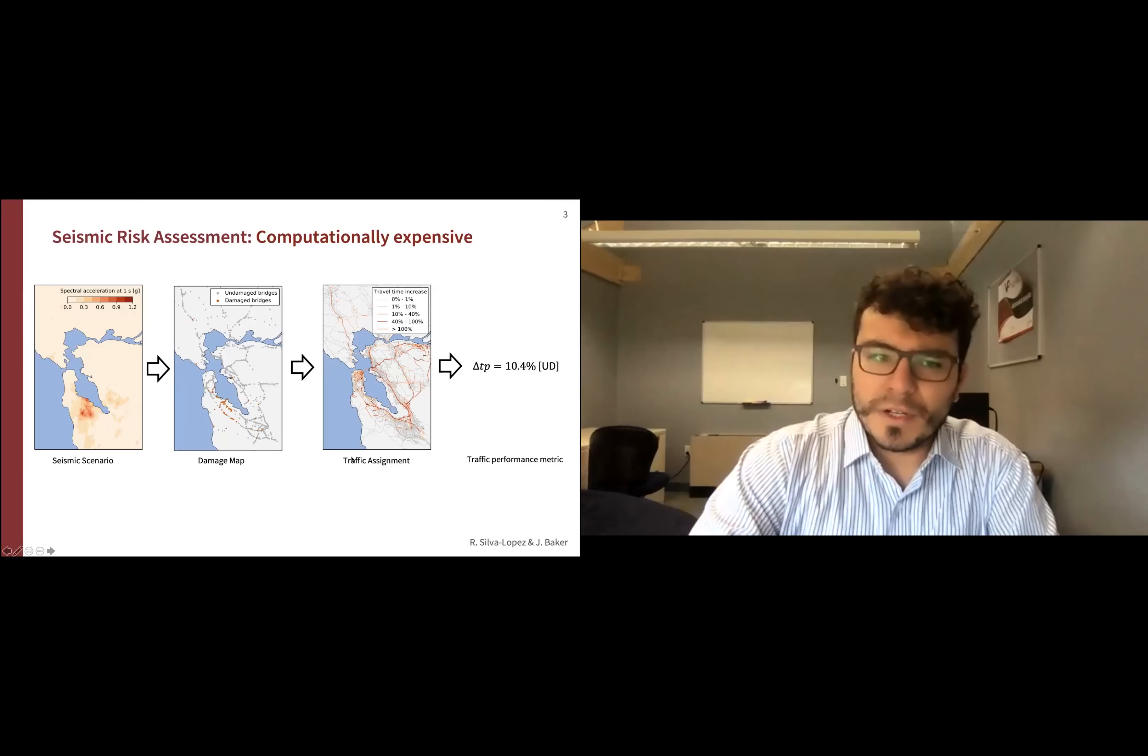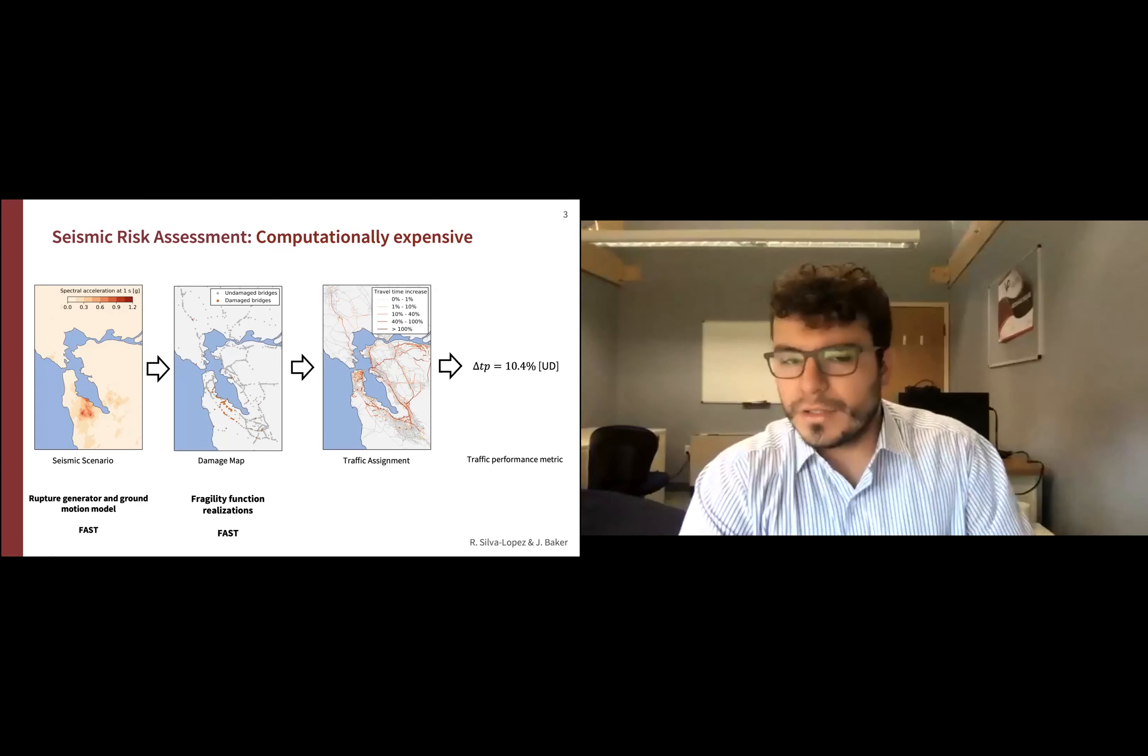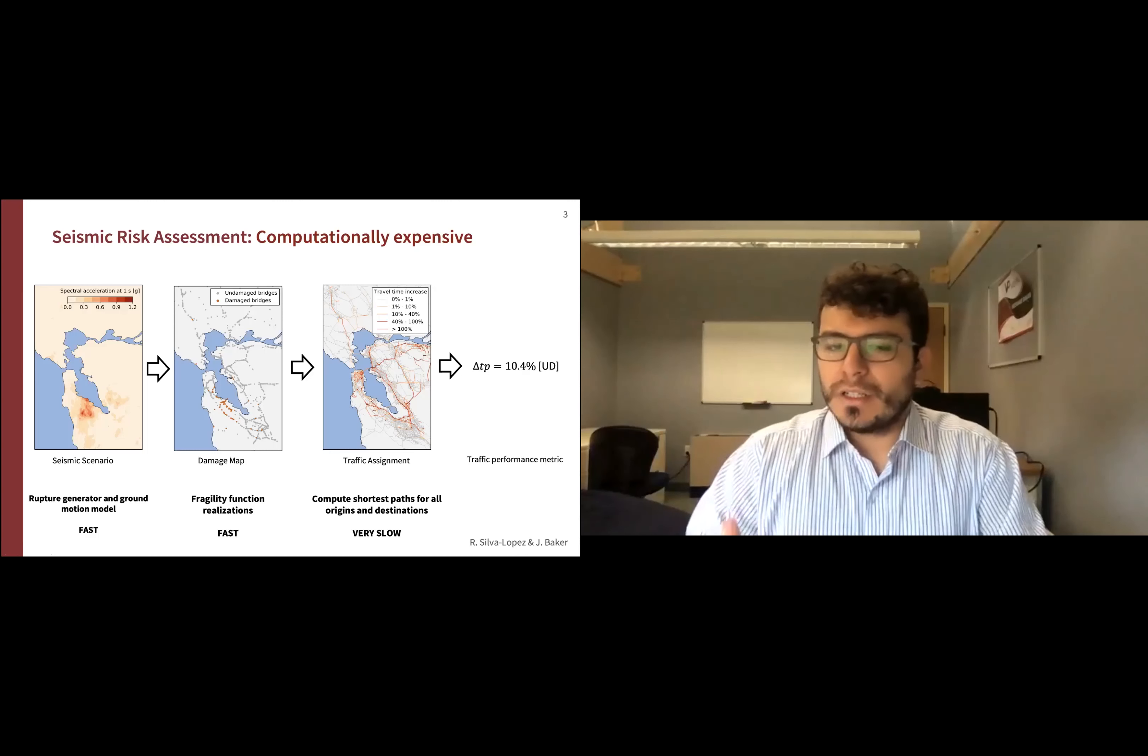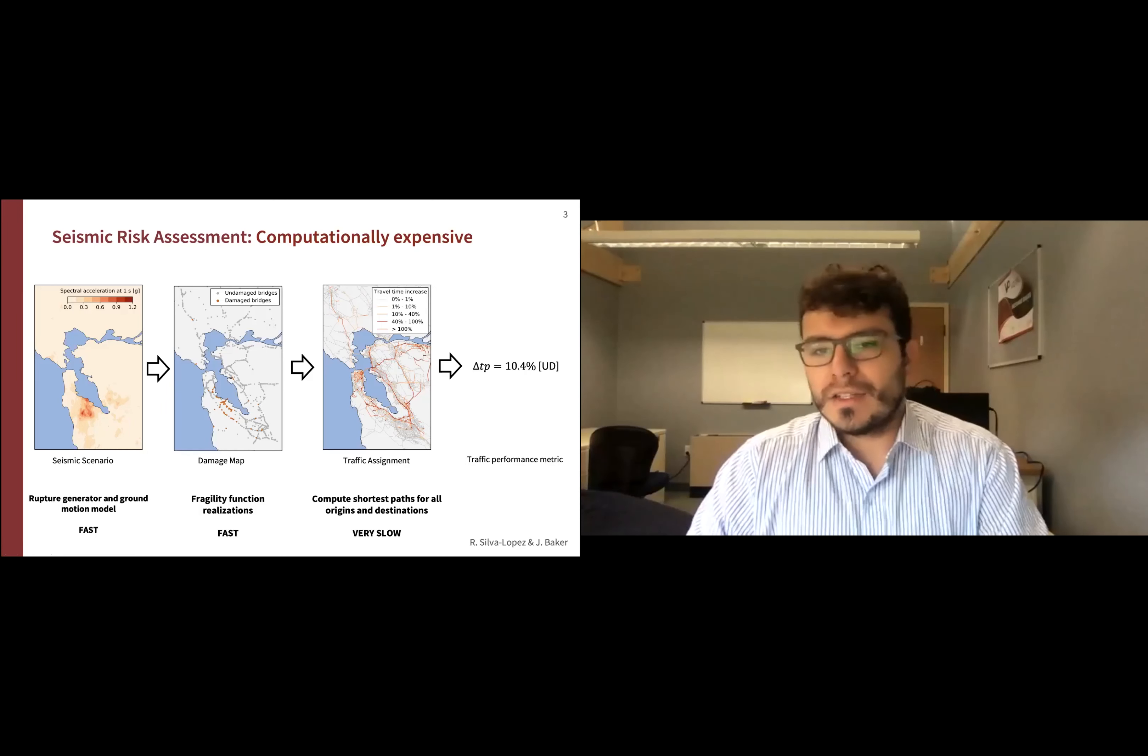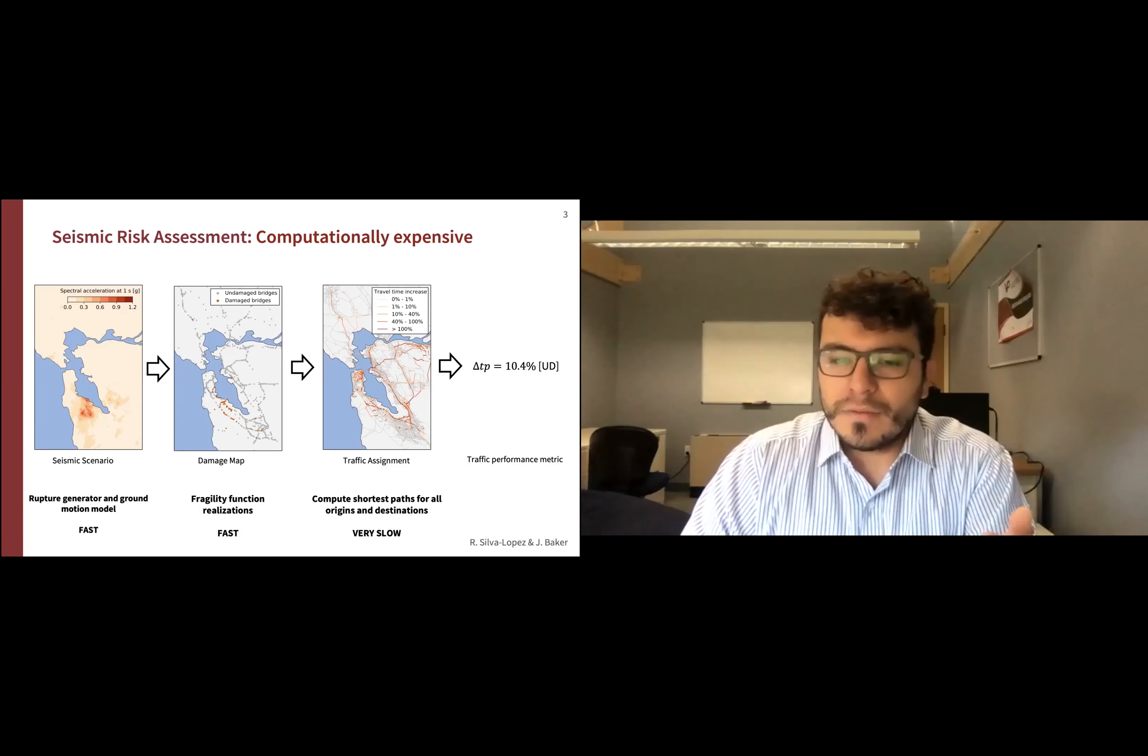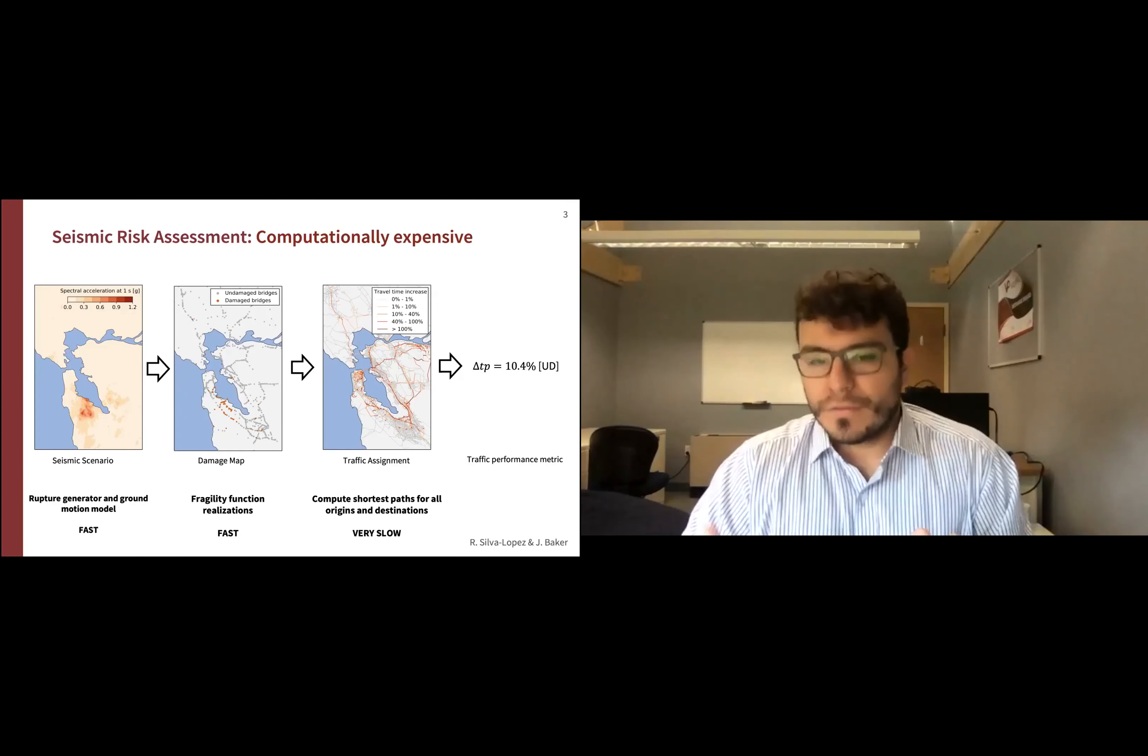As I mentioned, the motivation was that this is computationally expensive. Let's look where that cost comes from. A seismic scenario is fast - it's just a realization from a ground motion model. Fragility functions are also fast to compute - just a random number and a log-normal function. But when we think about traffic assignment, which is modeling how people will move, it's quite expensive computationally. In its simplest version, it requires computing the shortest path between all origin-destinations. The Bay Area had 1,600 census tracts, so running one realization of traffic assignment would need to compute the shortest path 2.5 million times, which of course is computationally expensive.